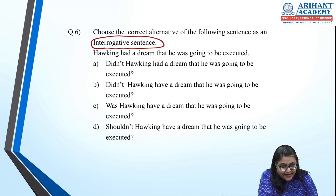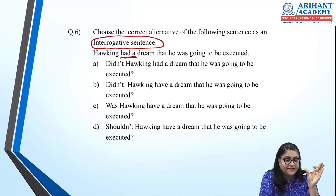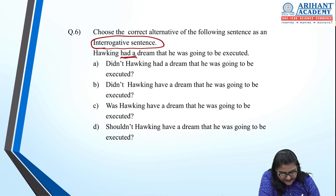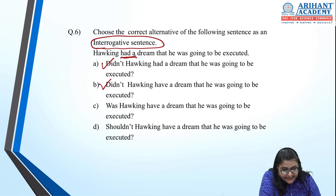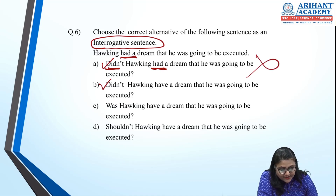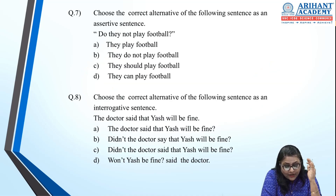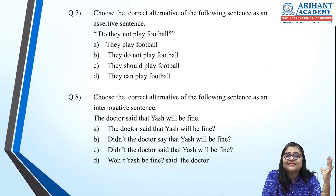Sixth: change to interrogative. 'Hawking had a dream that he was going to be executed.' This is simple past tense, so the question should also be simple past. If it is a positive sentence, it makes a negative question. Option B — 'Did Hawking have a dream that he was going to be executed?' — is correct. Option A is wrong because you cannot have two past tenses in one sentence.